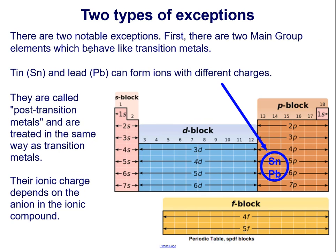There are two notable exceptions. First, there are two main group elements which behave like transition metals. Tin and lead can form ions with different charges, even though they are in the main group. They are called post-transition metals and are treated in the same way as transition metals. Their ionic charge depends on the anion in the ionic compound.